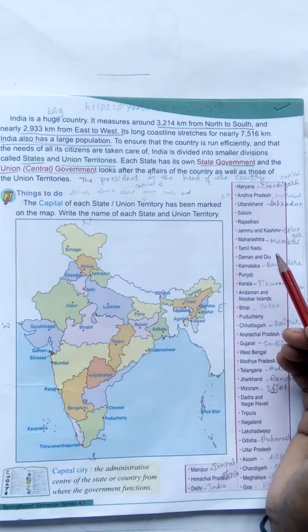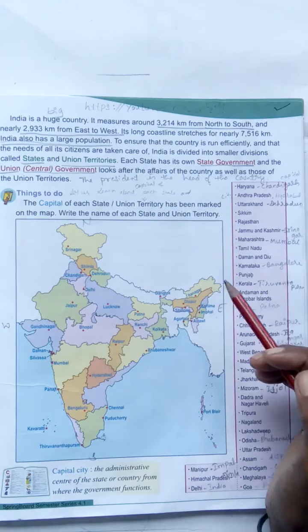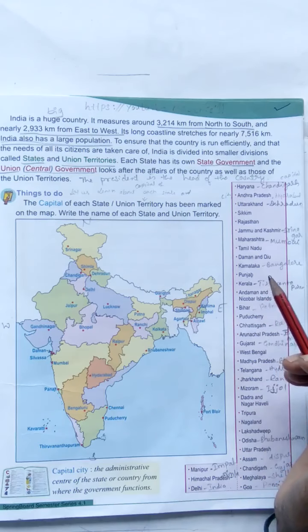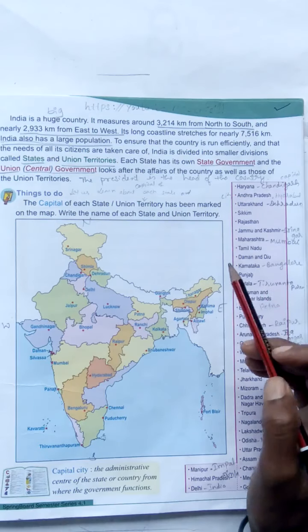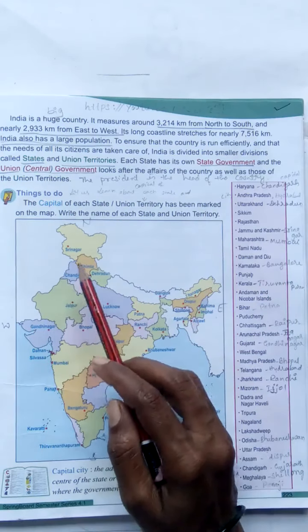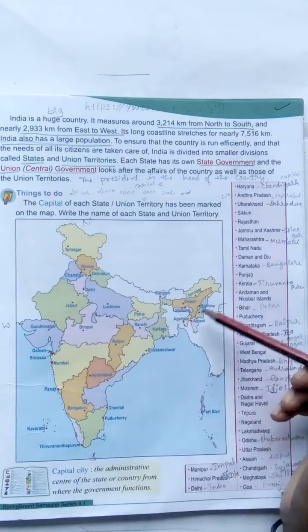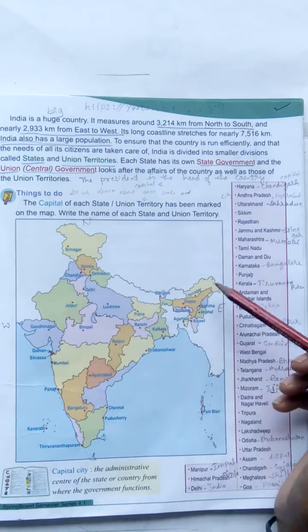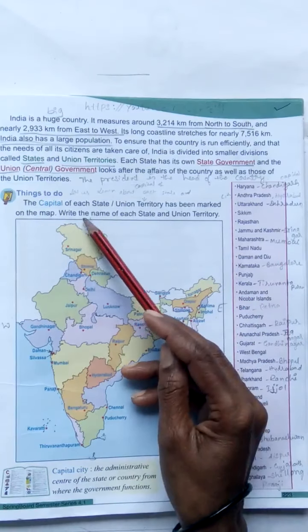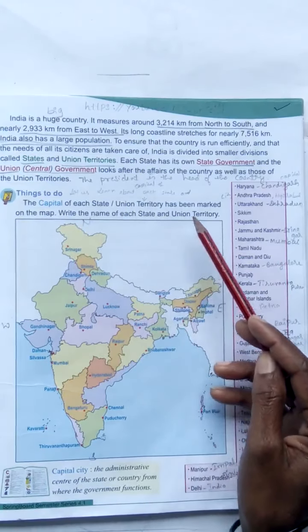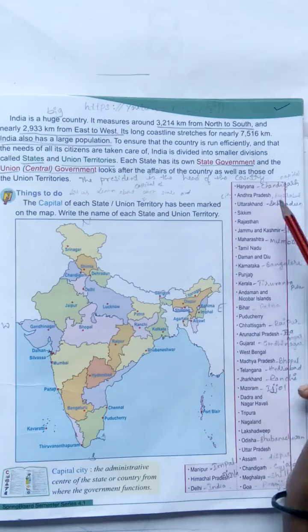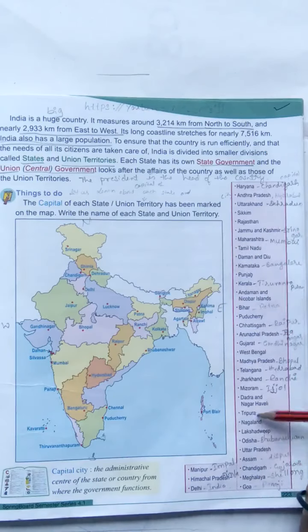Each country has its own customs and traditions. The president is the head of the country. See here — this is the India map. They have given the names of the states, the capital of each state, and union territories marked on the map. You have to write the name of each state and union territory. They have given here some names.